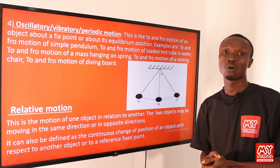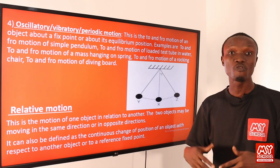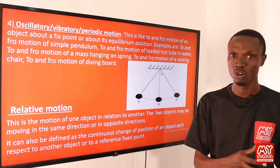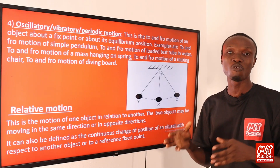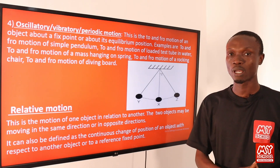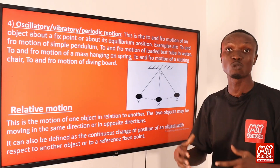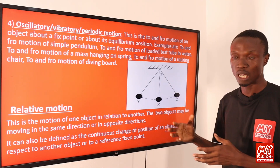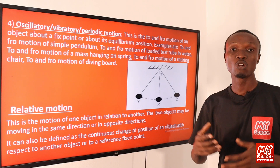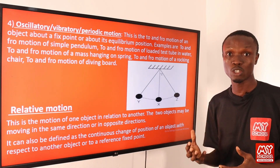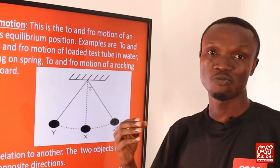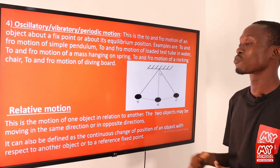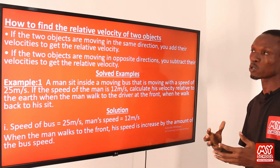For example, when you are in a moving car and look out through the window, you discover that the trees appear to be moving backward. In reality, the trees are stationary — it is your car that is moving forward. That is a typical example of relative motion. Calculations involving relative motion use relative velocity, relative speed, or relative acceleration.